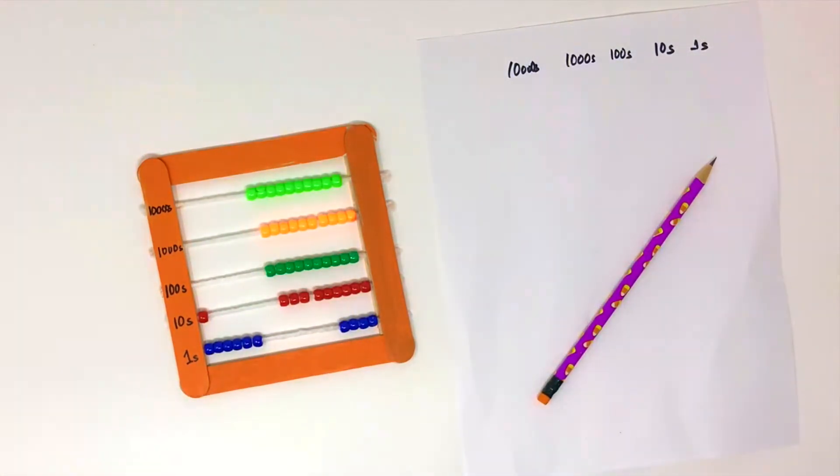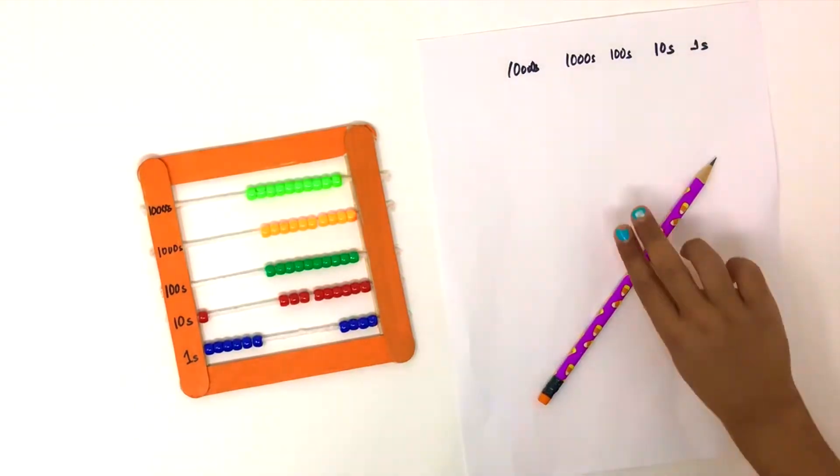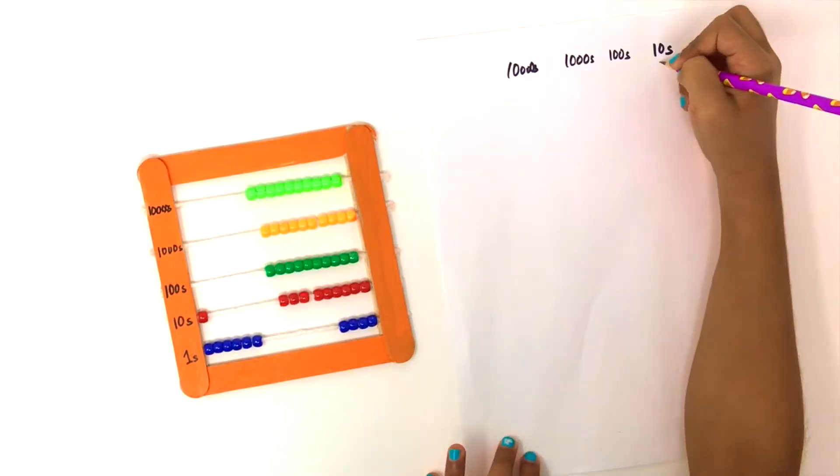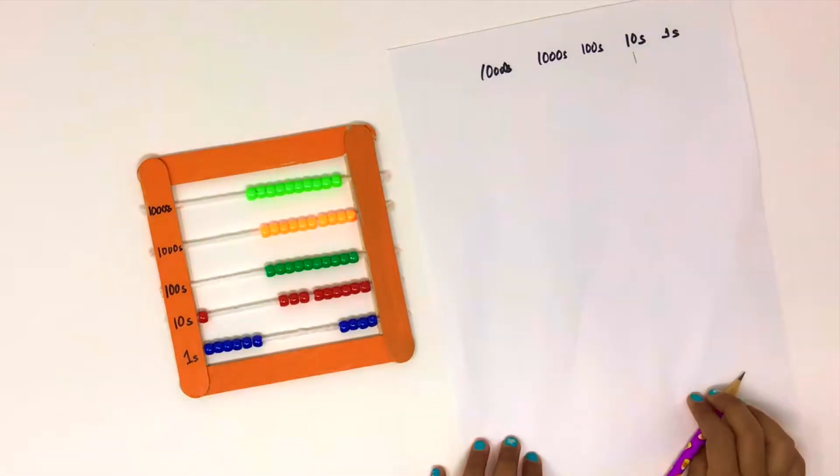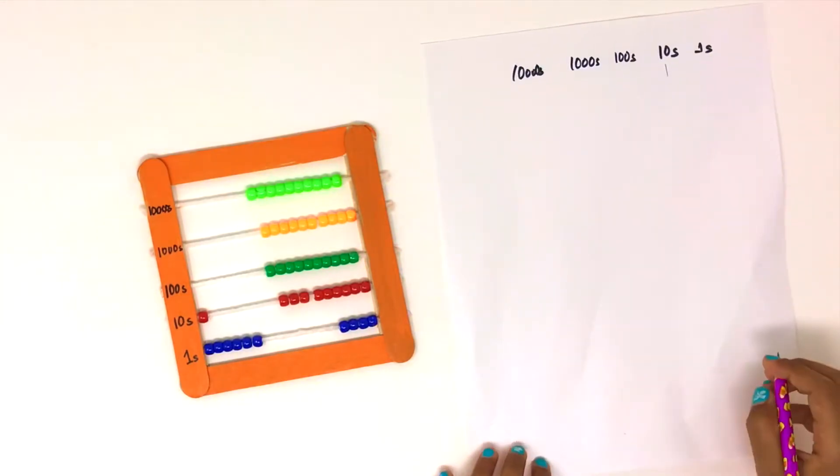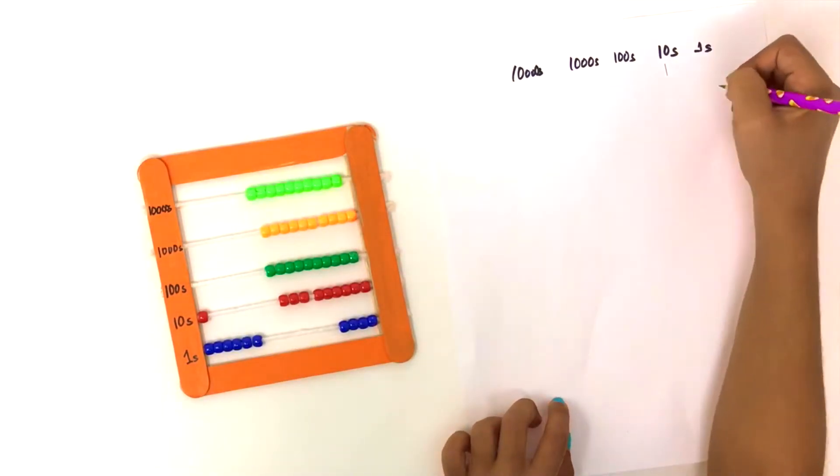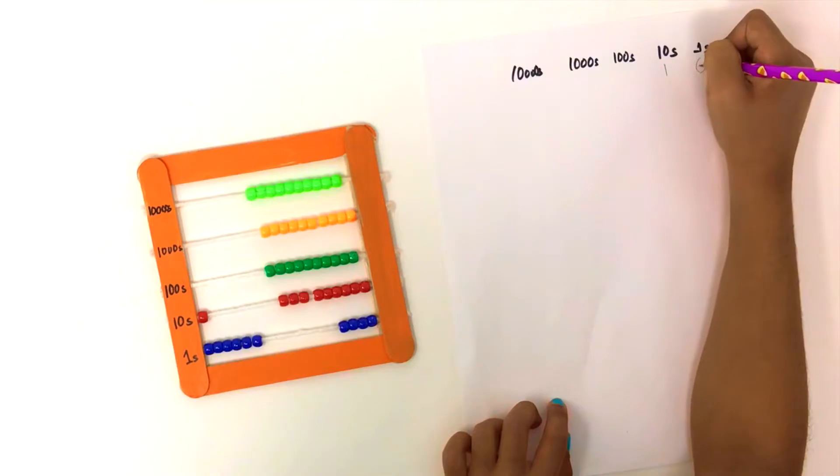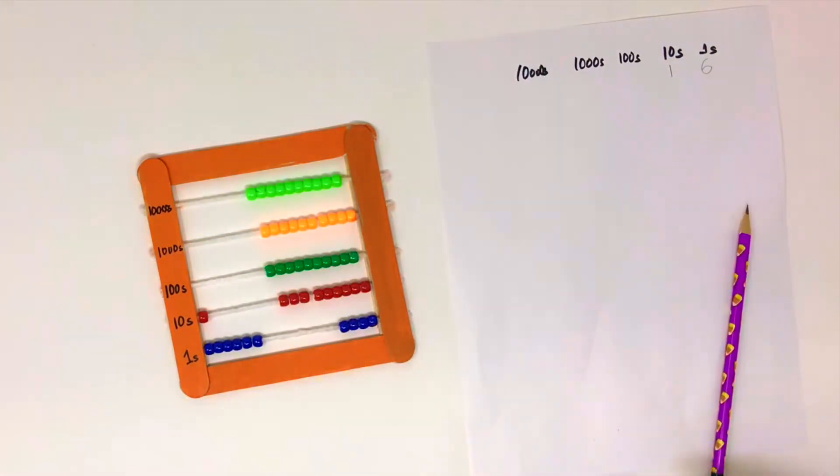So now how many beads do we have in the tens place? One. So let's write 1. How many beads do we have in the ones place? Six. So what number did we make? Sixteen. So 8 plus 8 equal to 16. Awesome.